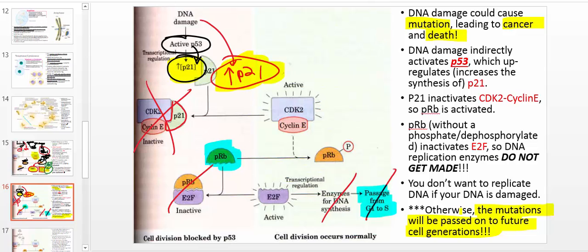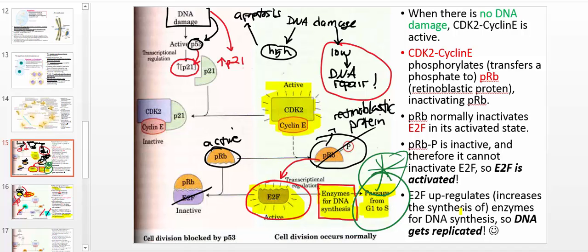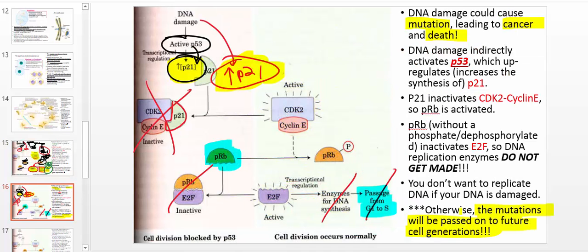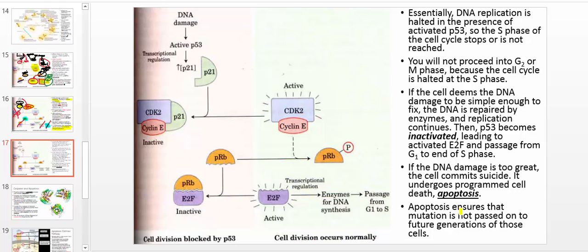The cell is designed to prevent mutation, and this is the mechanism by which it occurs. Notice that between the two scenarios they are the exact opposite of each other: active CDK2 in the normal case becomes inactive CDK2 through P21 activation in the DNA damage case. The idea is that when you have DNA damage, you stall the cell cycle before it enters the S phase, fix the DNA, and if the cell is able to fix it, you reactivate CDK2 and go into the S phase.